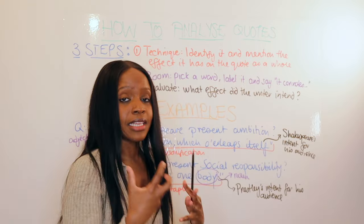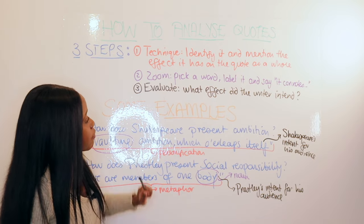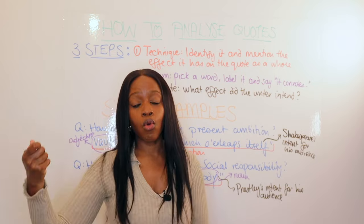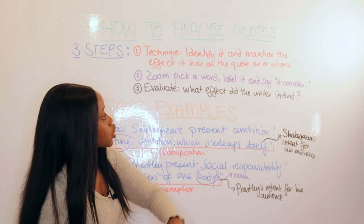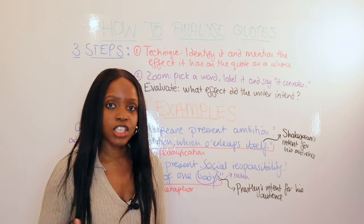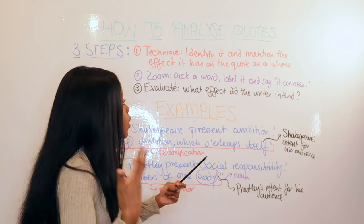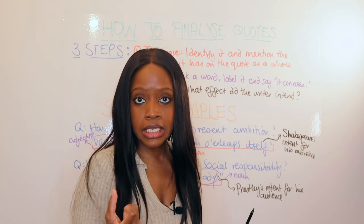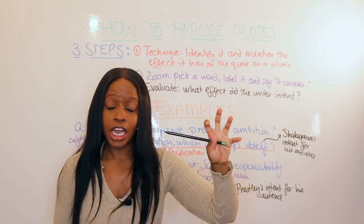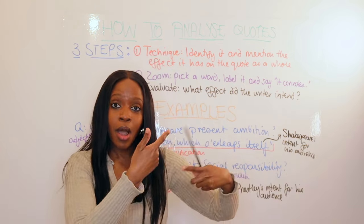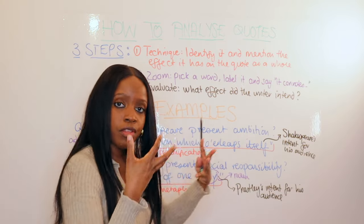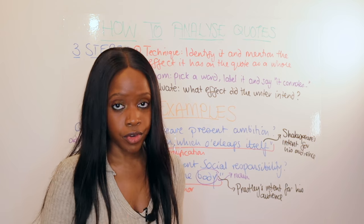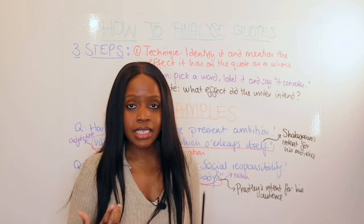Step three: don't stop there — mention and evaluate what effect you think the writer wanted to have on their reader or audience. You've mentioned the metaphor, found an adjective like 'red' connoting blood or danger, and now you consider: perhaps the writer wanted the reader or audience to feel a sense of fear, or maybe the author wants to foreshadow something the reader will remember later. You suggest: the author has done this because I think this is the effect they wanted to have on the reader.